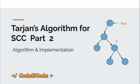Hello guys, this is Code and Code, and this is the 25th lecture of the Graph Theory Part One series — Part Two of Tarjan's algorithm for strongly connected components.